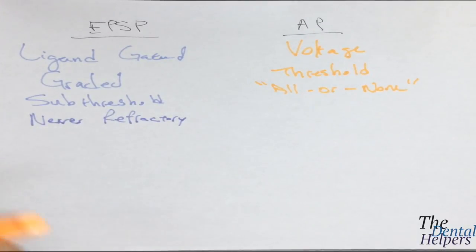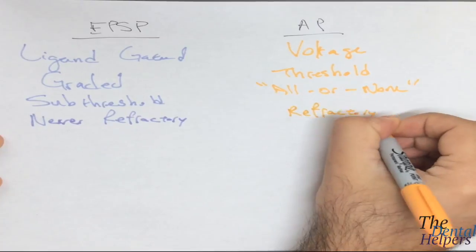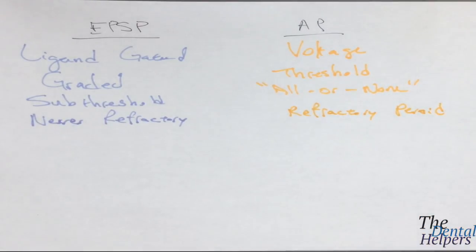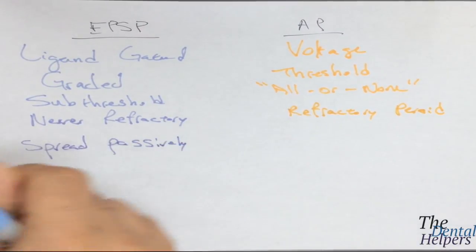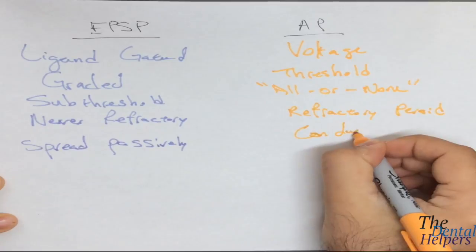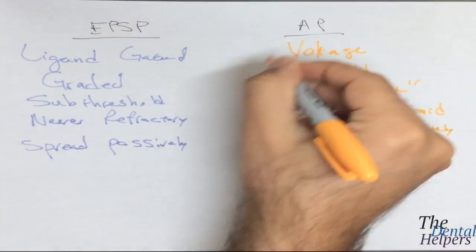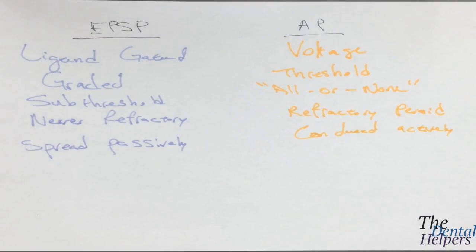Action potentials, as we've learned, have a refractory period — meaning they need time to recoup. The EPSP, on the other hand, spreads passively, while the action potential conducts. That makes sense: for an all-or-none action potential you need a signal to turn on, whereas the EPSP keeps going passively, allowing for a stronger or weaker response.